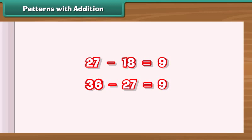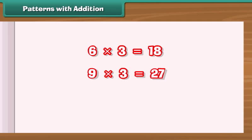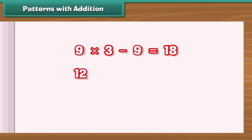There is another interesting fact. Each sum is thrice the middle term. 6 into 3 is 18. 9 into 3 is 27. 12 into 3 is 36.